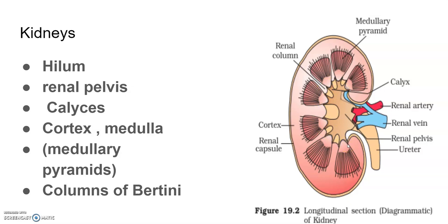The outer layer of the kidney is a tough capsule. Inside the kidney there are two zones: an outer cortex and an inner medulla. You can see here the cortex and medulla — this part is medulla and the outer part is cortex. The medulla is divided into a number of conical masses called medullary pyramids.